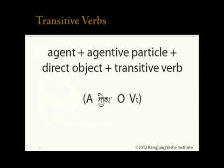The basic structure of a sentence with a transitive verb is: agent, agentive particle, direct object, transitive verb. Sometimes the direct object is marked by a la particle, but not always.